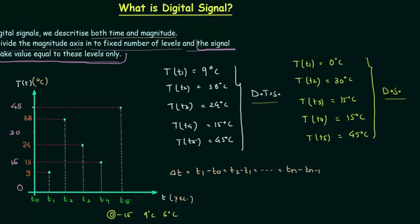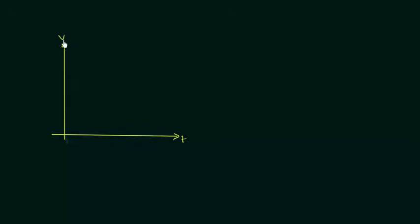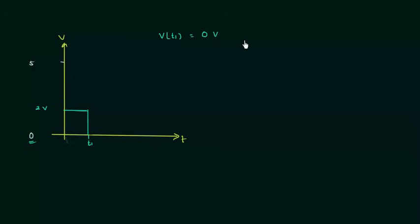Now we will see one more example in which we consider voltage. This is the time axis and capital V is the voltage. We are considering the digital signal with 0 volts and 5 volts as the two allowed values. If at time t1 the voltage is equal to 2 volts, then the voltage at t1 is equal to 0 volts because we have to consider the lower value. So the error is 2 volts, because the observed voltage was 2 volts but we are getting 0 volts.